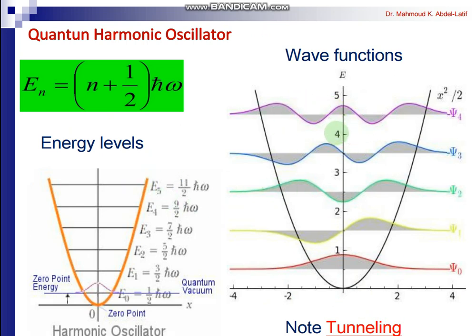Solving the Schrödinger equation also gives us the wave functions for n = 0, 1, 2, 3, 4. The energy levels are equidistant. Notably, the wave function extends beyond the classical boundary — unlike the particle-in-a-box — and this is called tunneling, defined as the presence of a particle in a classically forbidden region.